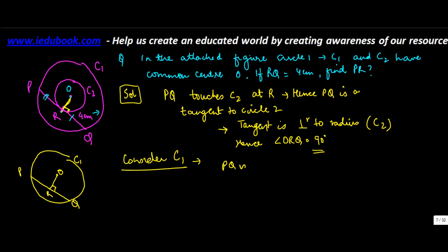PQ is a chord in C1. If you remember the theorem, it says that a perpendicular from the center bisects the chord. Which means that if OR is 90 degrees, then ideally OR should bisect chord PQ.